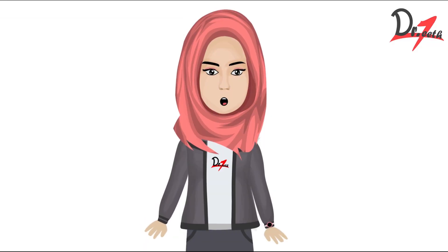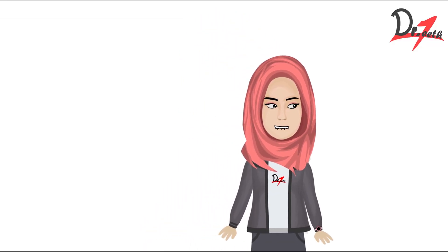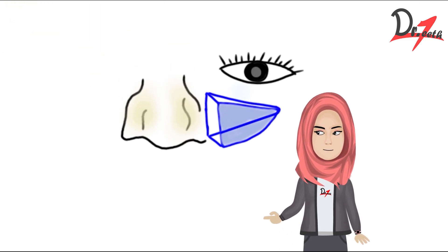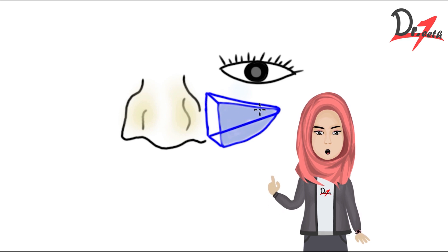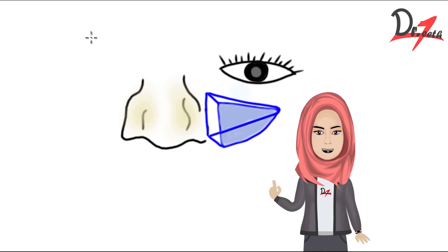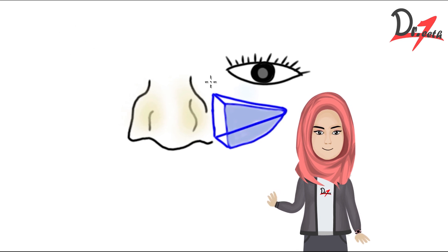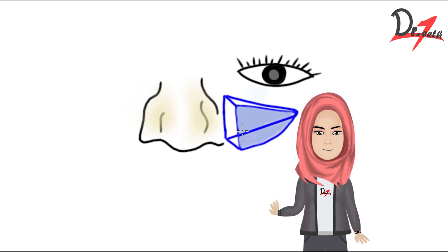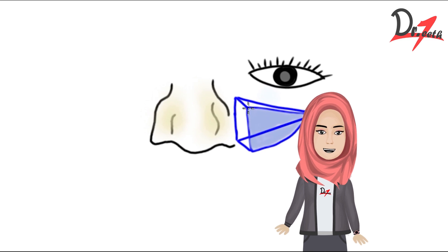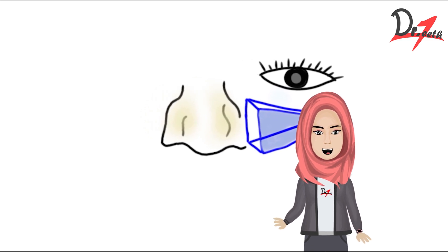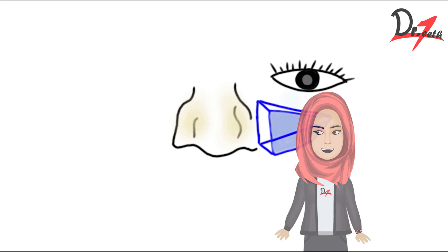I'm going to bring something for you here. So here we have it — if you can make out from my drawing skill, this is our nose, and this is the eye. This structure here is the maxillary sinus. Let us first understand what a sinus is, then what paranasal sinuses are, and then we'll talk about the maxillary sinus in detail.